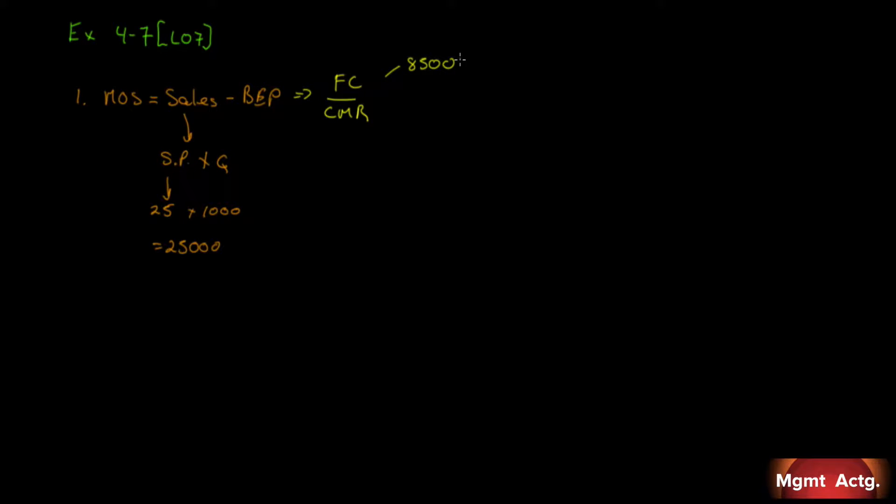Do we have our contribution margin ratio? No, we don't. So we have to calculate it. We calculate it by the selling price, which is $25, so that's 100%, minus our variable cost per unit, which we're told is $15 per unit. There's 15, which is 60%. That leaves us with 10 or 40%. So now we have our contribution margin ratio. So we can return back to this one equals 8,500 divided by 0.4. And of course, this is just calculator work, $21,250.